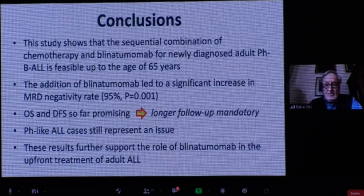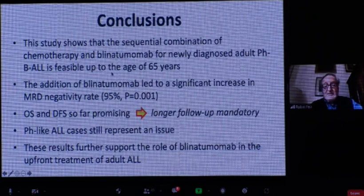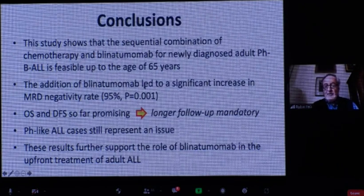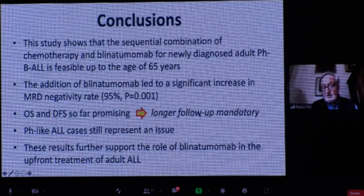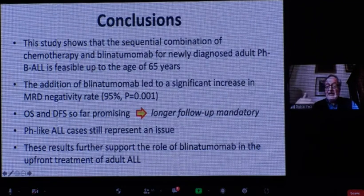In summary: the sequential combination of chemotherapy and blinatumomab for newly diagnosed Philadelphia-negative B-lineage ALL (up to age 65) is feasible. Blinatumomab led to a significant increase in MRD-negative cases, and overall survival and disease-free survival look promising — though longer follow-up is needed. Philadelphia-like cases remain an open problem. This study further supports the role of blinatumomab in upfront treatment of adult ALL, not only in relapsed settings.